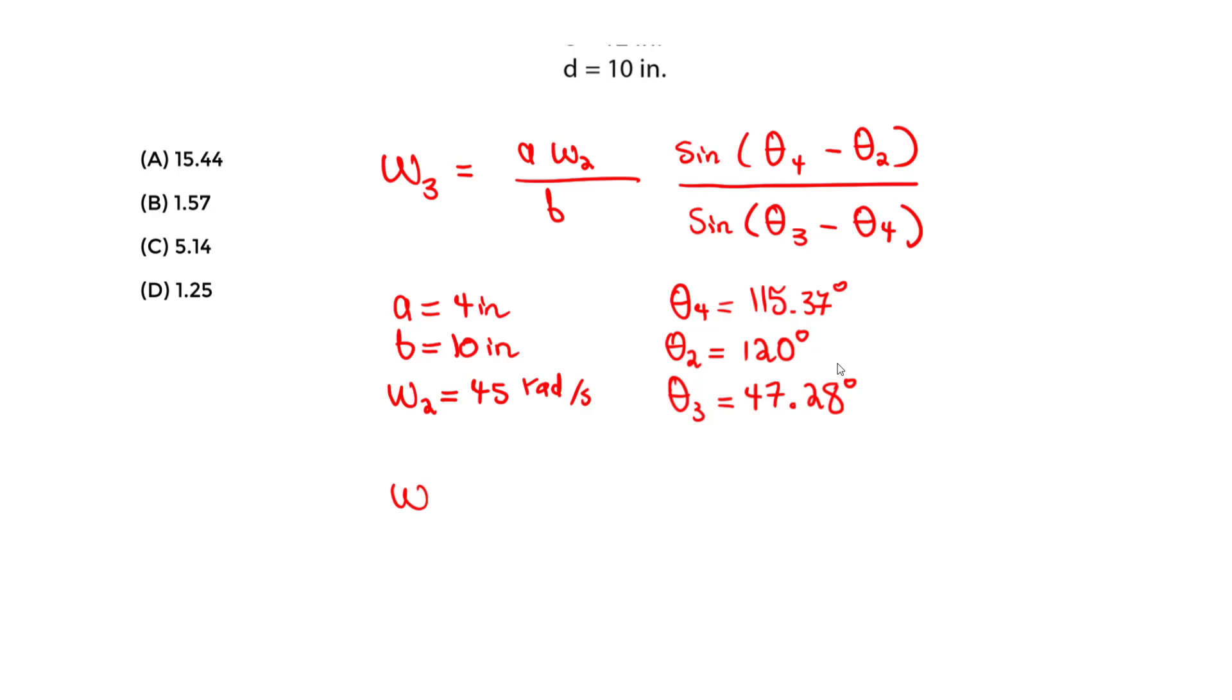So let's just use this and we take a is four inches times omega_2 is 45 divided by the b value which is 10 inches, and we take that times the sine of theta_4 is 115.37 degrees minus theta_2, which is 120 degrees, divided by the sine of theta_3, which is 47.28 degrees, minus theta_4, which is 115.37 degrees.